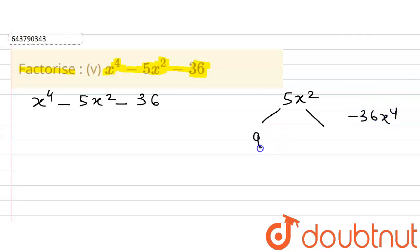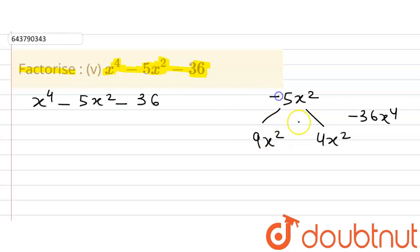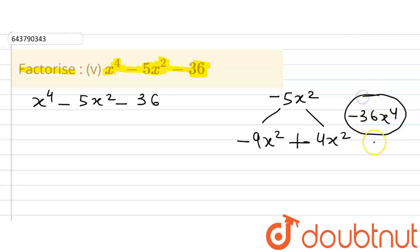We observe that when we take 9x squared and 4x squared, the difference between these two is 5x squared, which matches the middle term. Taking the sign into account, the middle term will be minus 5x squared. So minus 9x squared plus 4x squared gives minus 5x squared, and multiplying minus 9x squared by 4x squared gives minus 36x raised to the power 4.